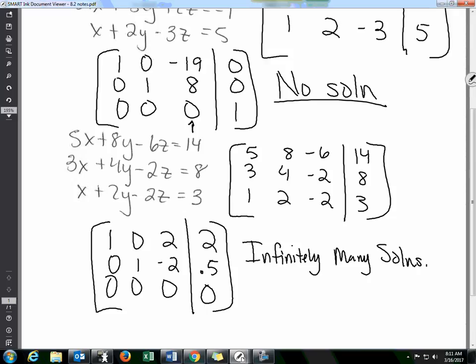So I guess I should have picked one that had an actual solution, right? But so if you get zero equals one, it's no solution. If you get zero equals zero on the bottom, then infinitely many. And then if you have the diagonal ones and everything else is zero, and then you have three numbers on the very most right side, then those are your solutions to your system.